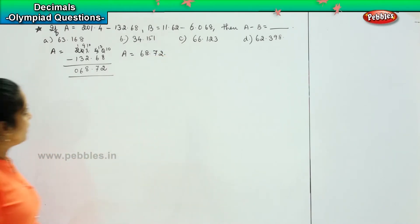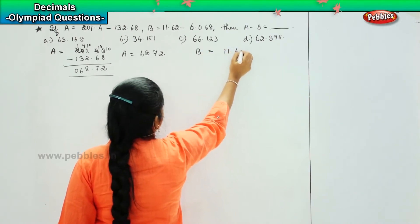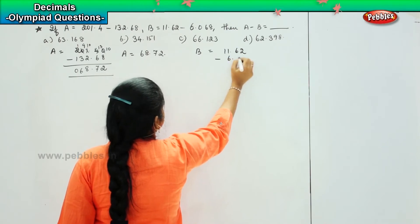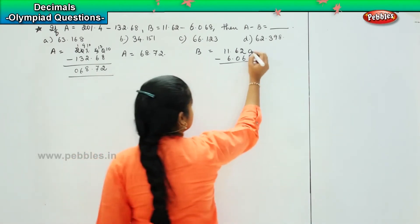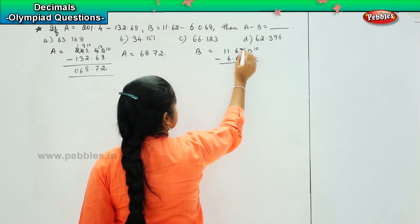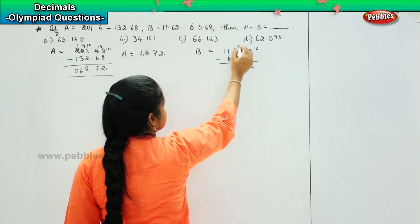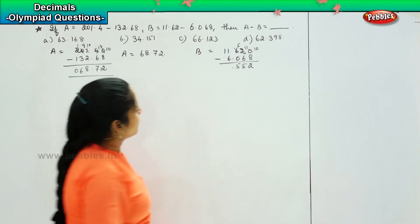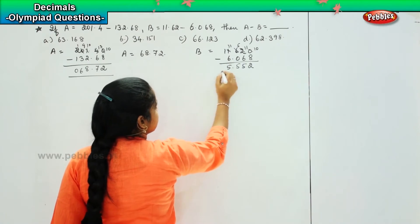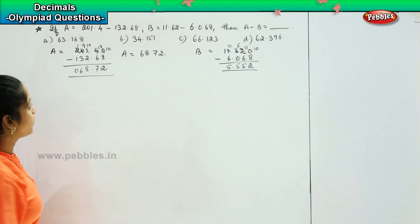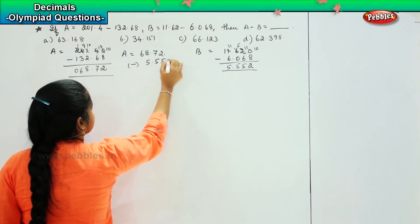Coming to B, B says 11.62 minus 6.068, which is 620 here. So now 10 minus 8 is 2, this becomes 1, this becomes 11. So 11 minus 6 is 5, this becomes 5, 5 minus 0 is 5. And here again it becomes 11, 11 minus 6 is 5. So it is 5.552.